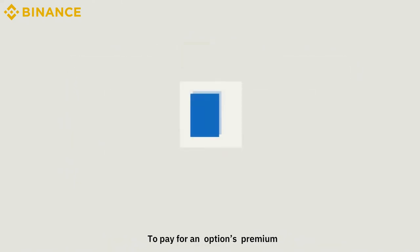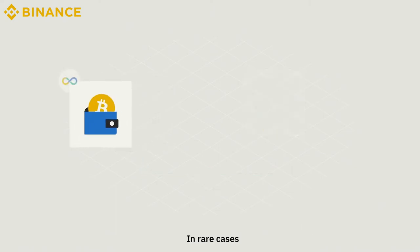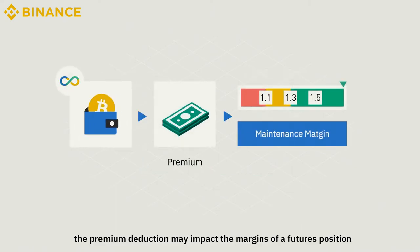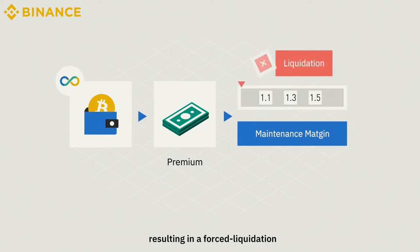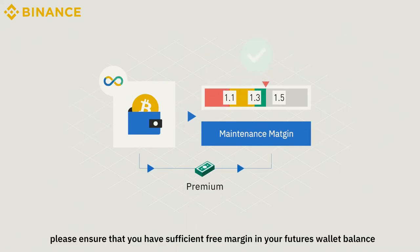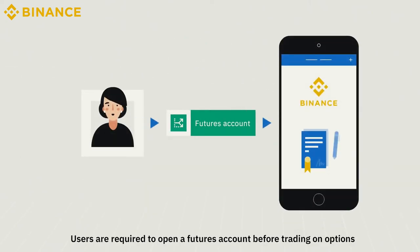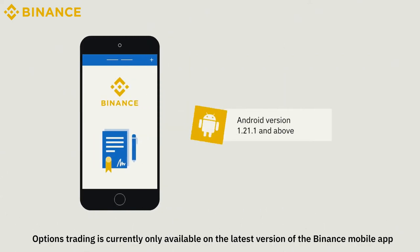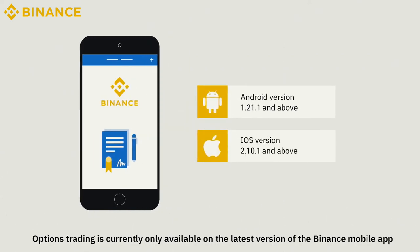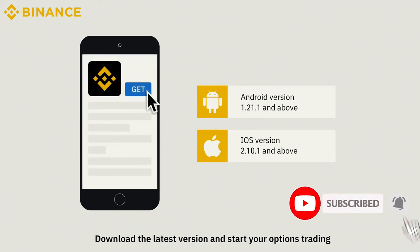To pay for an options premium, premiums will be deducted from the futures wallet. In rare cases, the premium deduction may impact the margins of a futures position, resulting in a forced liquidation. Therefore, before placing an options order, please ensure that you have sufficient free margin in your futures wallet balance. Users are required to open a futures account before trading on options. Options trading is currently only available on the latest version of the Binance mobile app. Download the latest version and start your options trading.